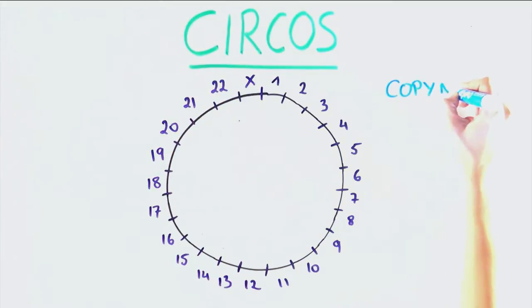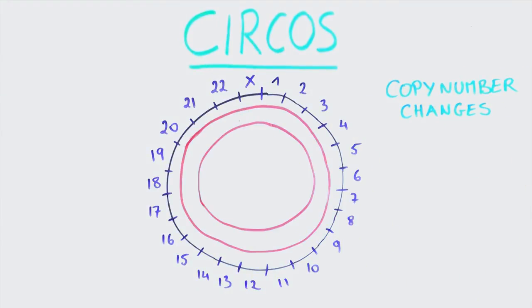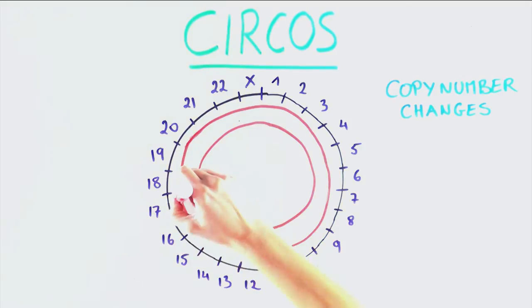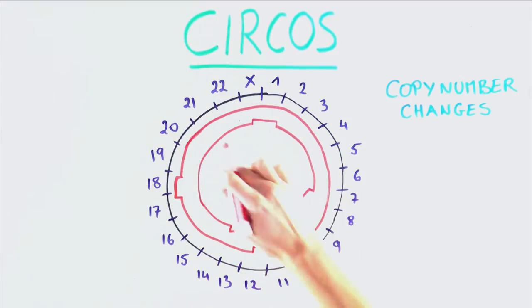Copy number changes of multiple tumor samples are shown inside the circle. Here, each line represents a different sample with average probe values representing copy number. If a gene has duplicated, the line for that sample moves outward. If a copy was lost, it moves inward.